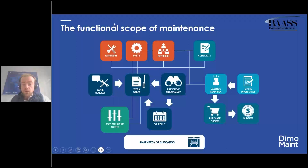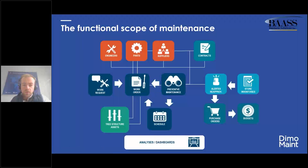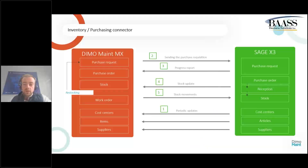Work orders are linked to who will do them — an engineer, a mechanic, an electrician, or a contractor — and to all the parts, consumables, and tools needed. You can also manage inventory alerts, stock alerts, purchase orders and purchase requests, and manage the budget. All of this is the scope of Dimo MX, and it integrates with Sage X3.